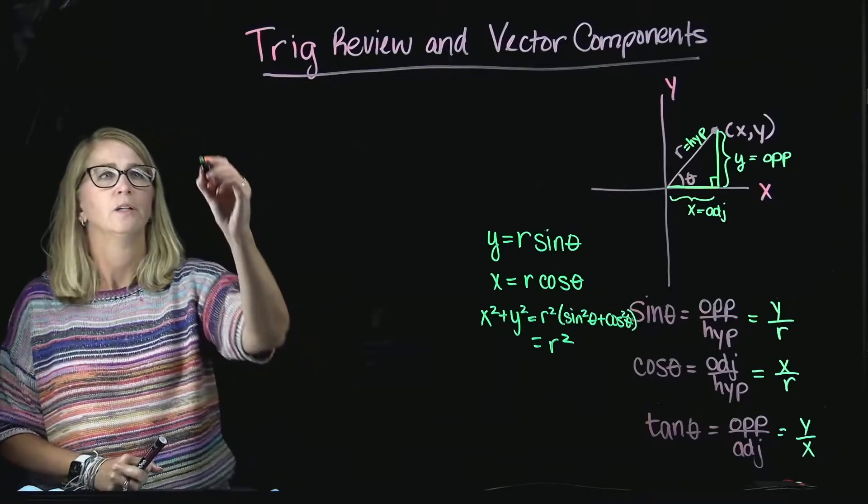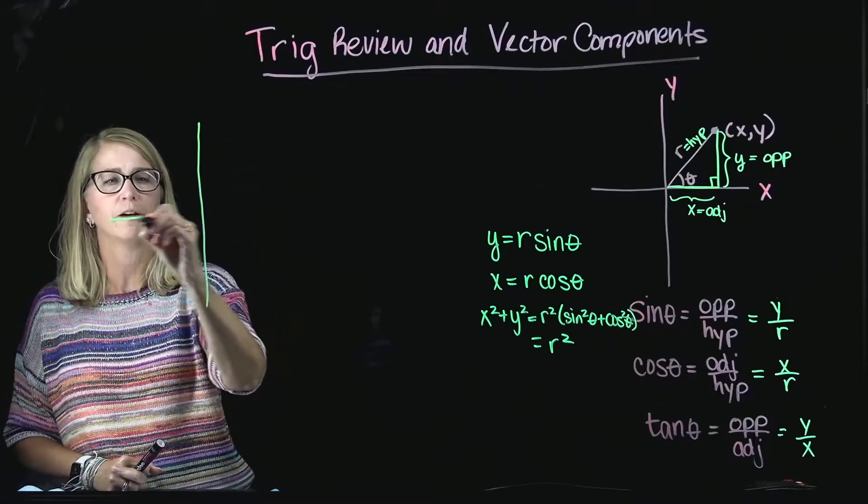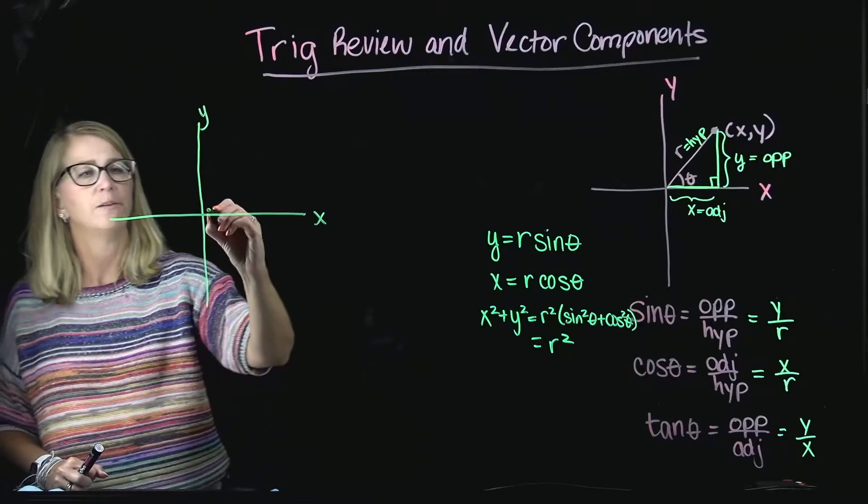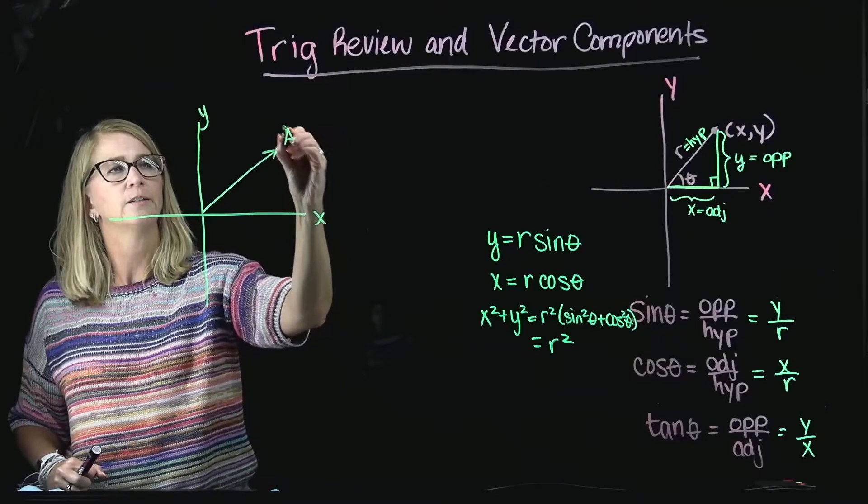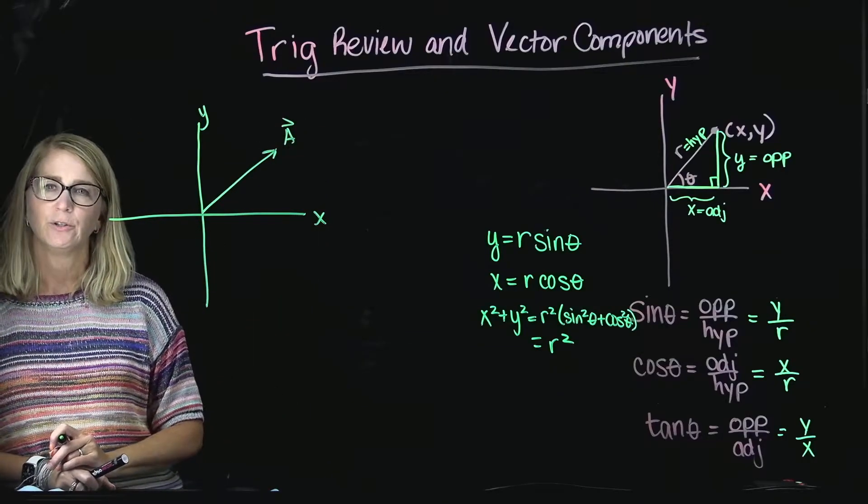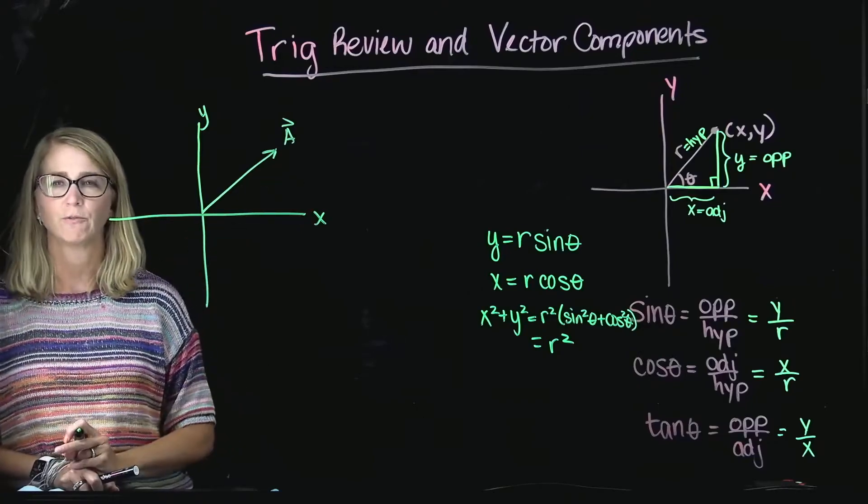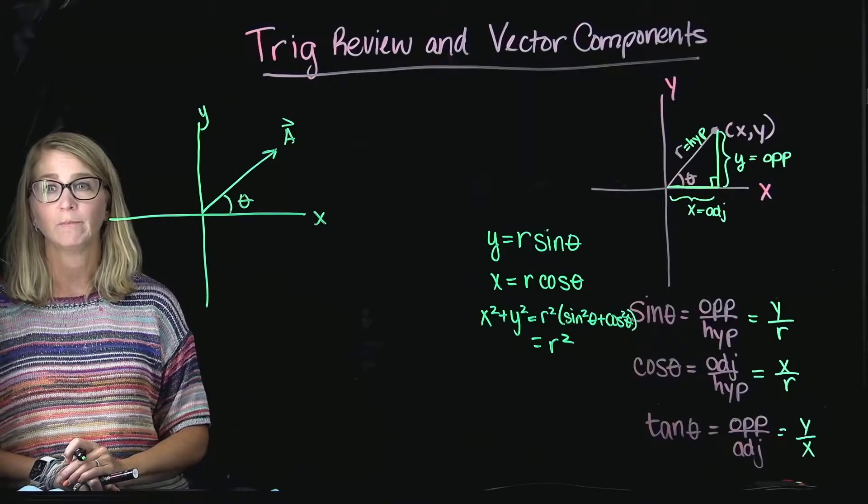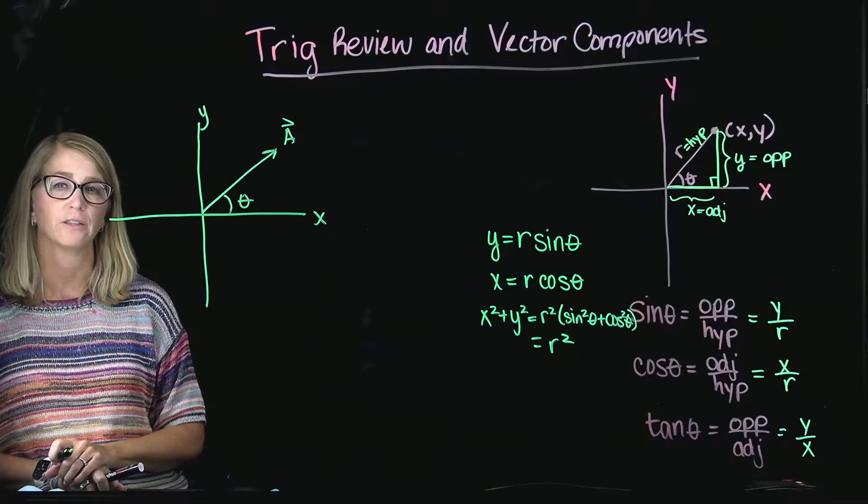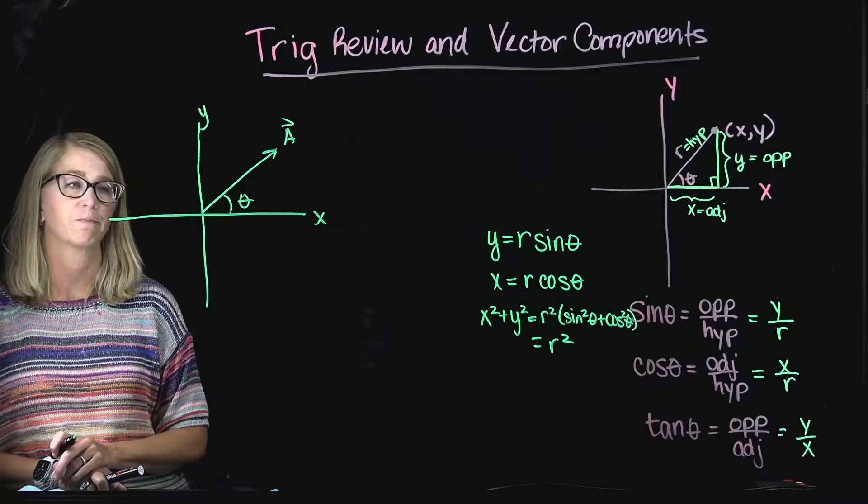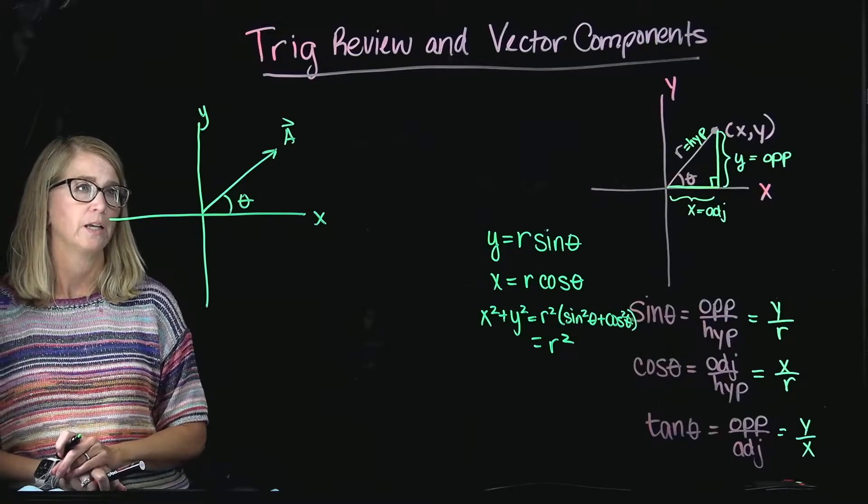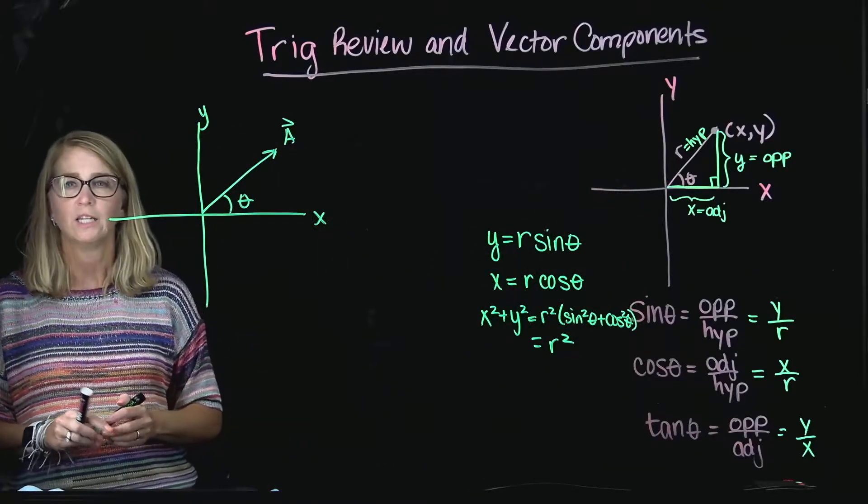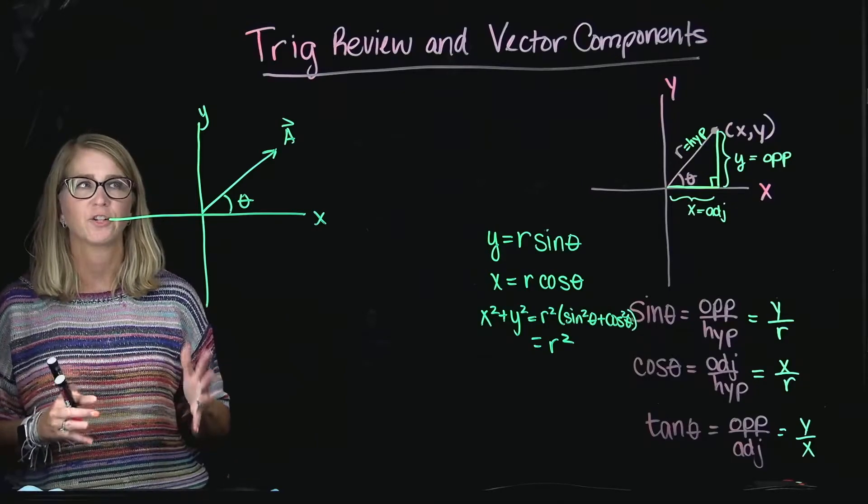So, why is this useful? Well, when we start talking about vectors, what we learn about a vector is that it has a magnitude and it has a direction. The magnitude is really reflected in the length of a vector. The direction is the angle normally, although sometimes it can be defined differently, the angle that that vector makes with the positive X axis.